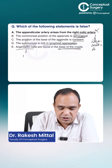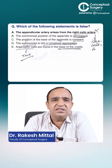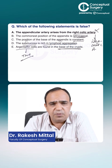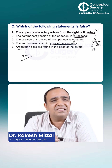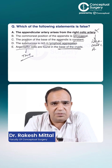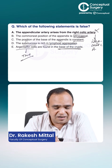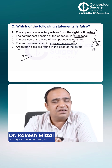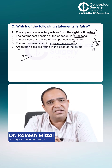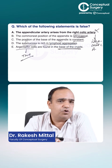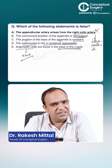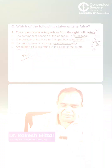Argentaffin cells are found in the base of the crypts — that is true. There is a very prominent tumor of the appendix called the carcinoid tumor, and its origin is these argentaffin cells, which is why we also call it argentaffinoma. I have a question at the end where we'll discuss it in detail.